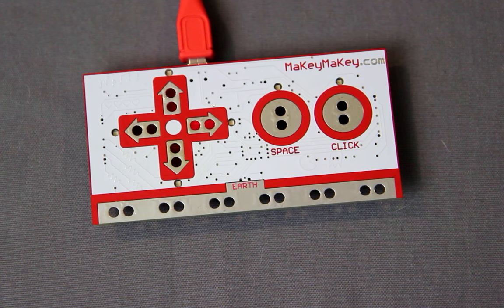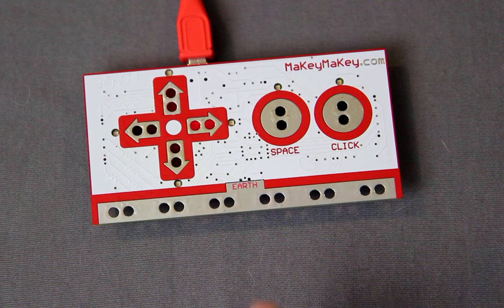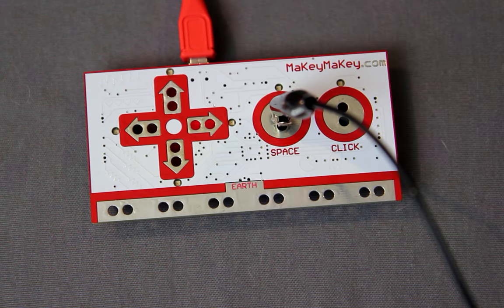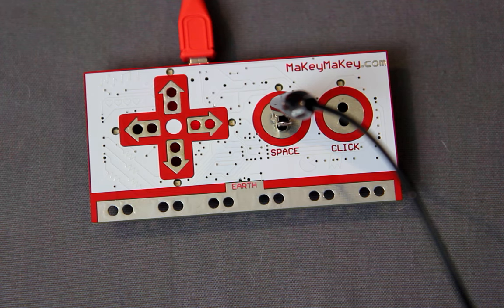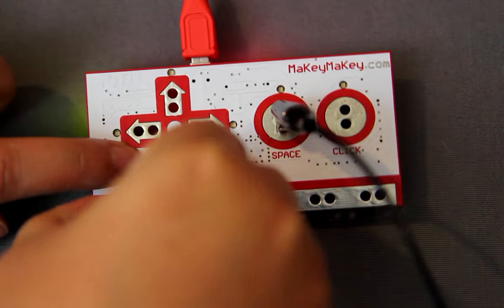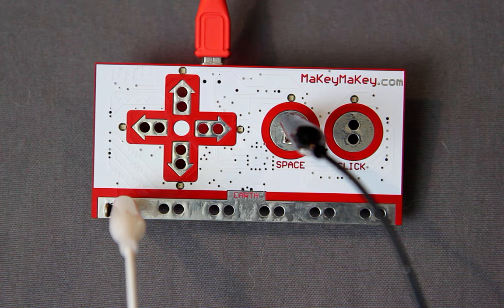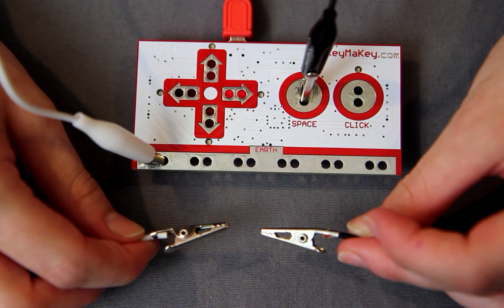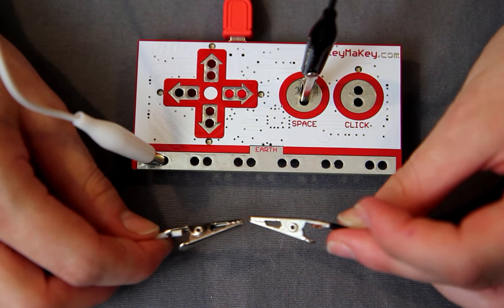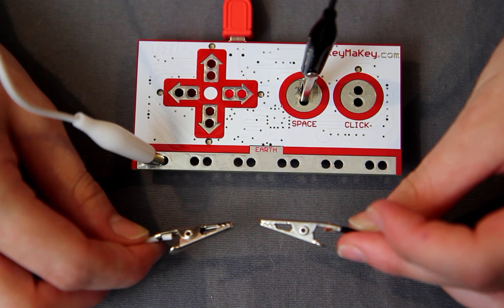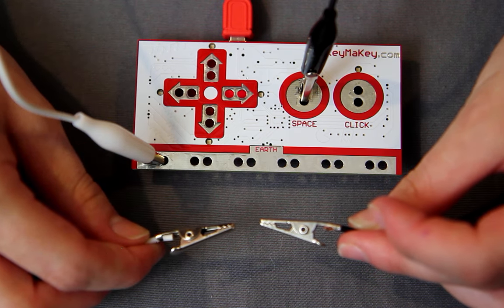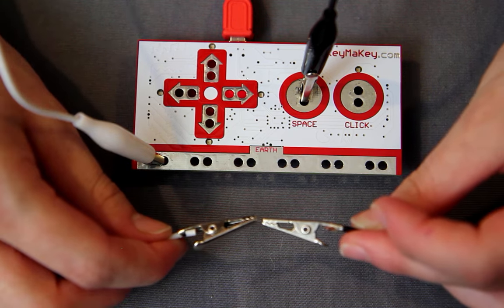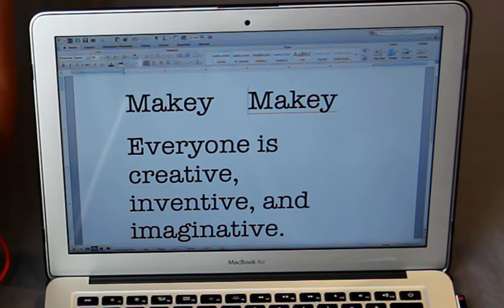Let's first connect our space bar. To do that, plug an alligator clip into the port labeled space on the Makey Makey. We also need to plug an alligator clip into one of the ports for Earth at the bottom of the board. Now we have an open circuit that gets power from the Makey Makey board, which is plugged into the computer. The electricity runs up from the board into the wire, and we can close the circuit by touching the two alligator clips together so the electricity can flow back down the other wire, closing the circuit. Each time we touch the clips together, the green light above space should turn on, and a signal that the space bar is being pressed is being sent to the computer.